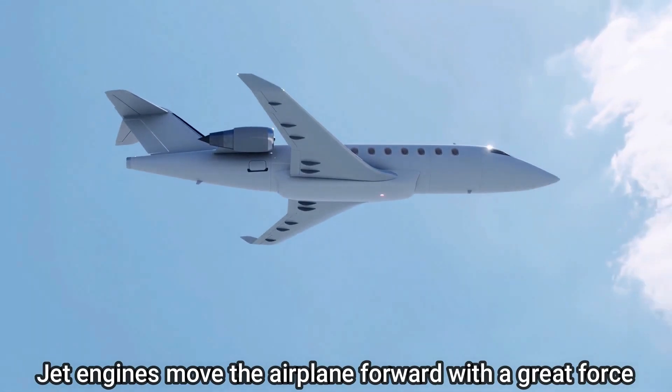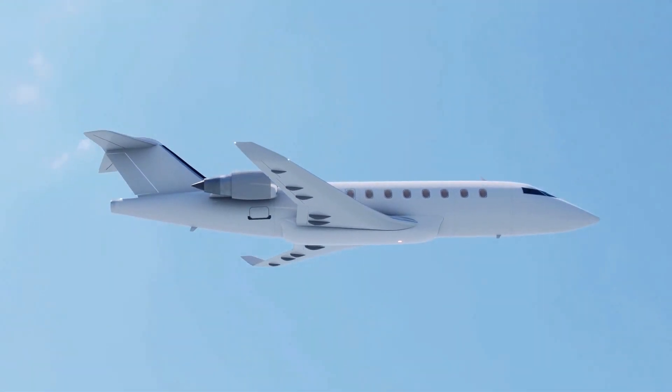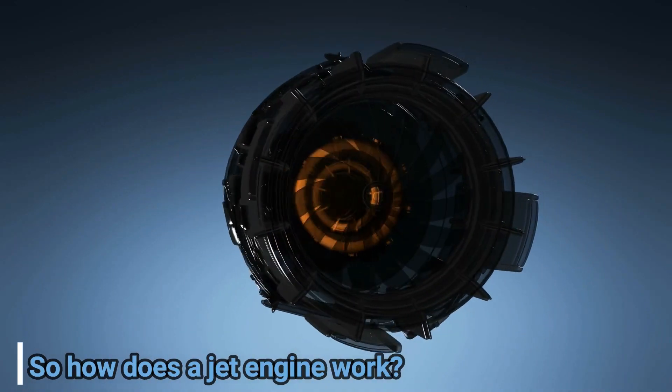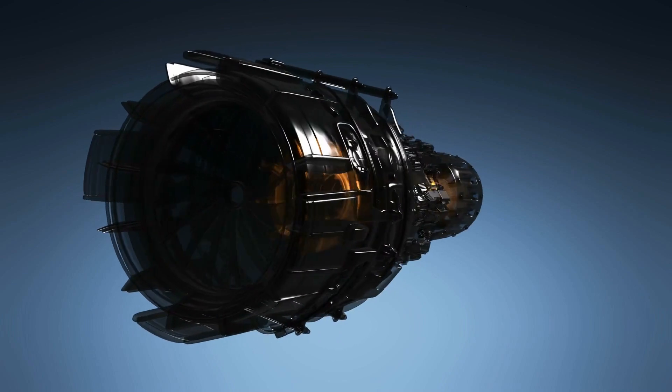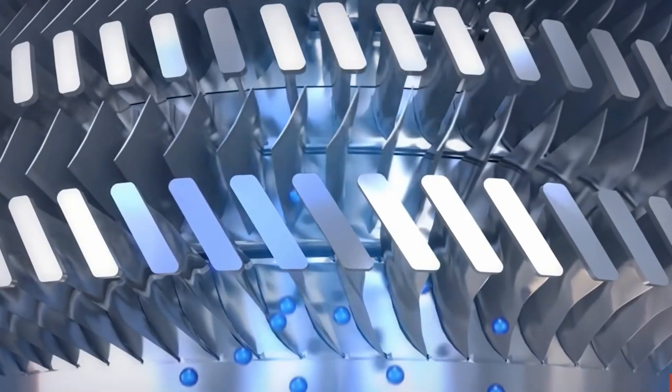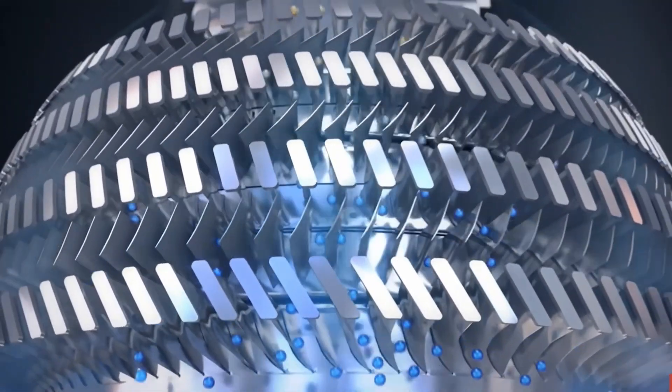Jet engines move the airplane forward with a great force that is produced by a tremendous thrust and causes the plane to fly very fast. So how does a jet engine work? A more technical name for a jet engine is a gas turbine, and it's actually a much better description of how a jet engine really works.